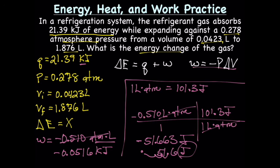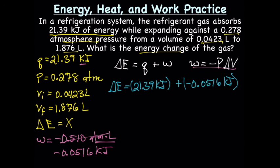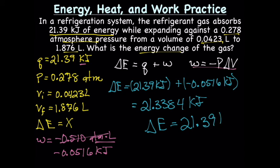Now we're finally ready to solve for delta E. Delta E equals Q, which in this case is 21.39 kilojoules, plus W, which is negative 0.0516 kilojoules, gives us 21.338 kilojoules. Digits after the decimal is 2, so delta E equals 21.34 kilojoules.